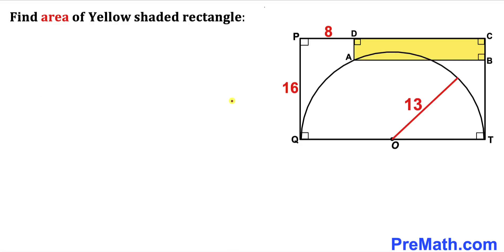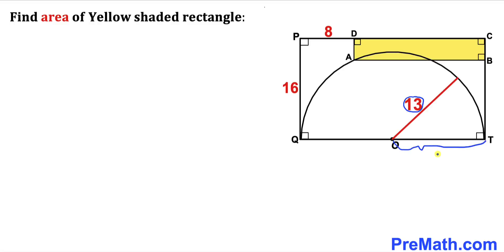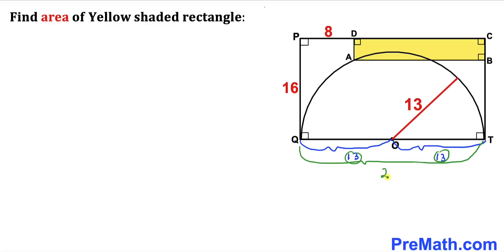Let's get started with the solution. To calculate the area of rectangle ABCD we must find the length DC and the width AD. Let's focus on the radius of the semicircle, which is 13 units. Both radii are 13, so the whole diameter QT is going to be 13 plus 13, giving us 26 units.